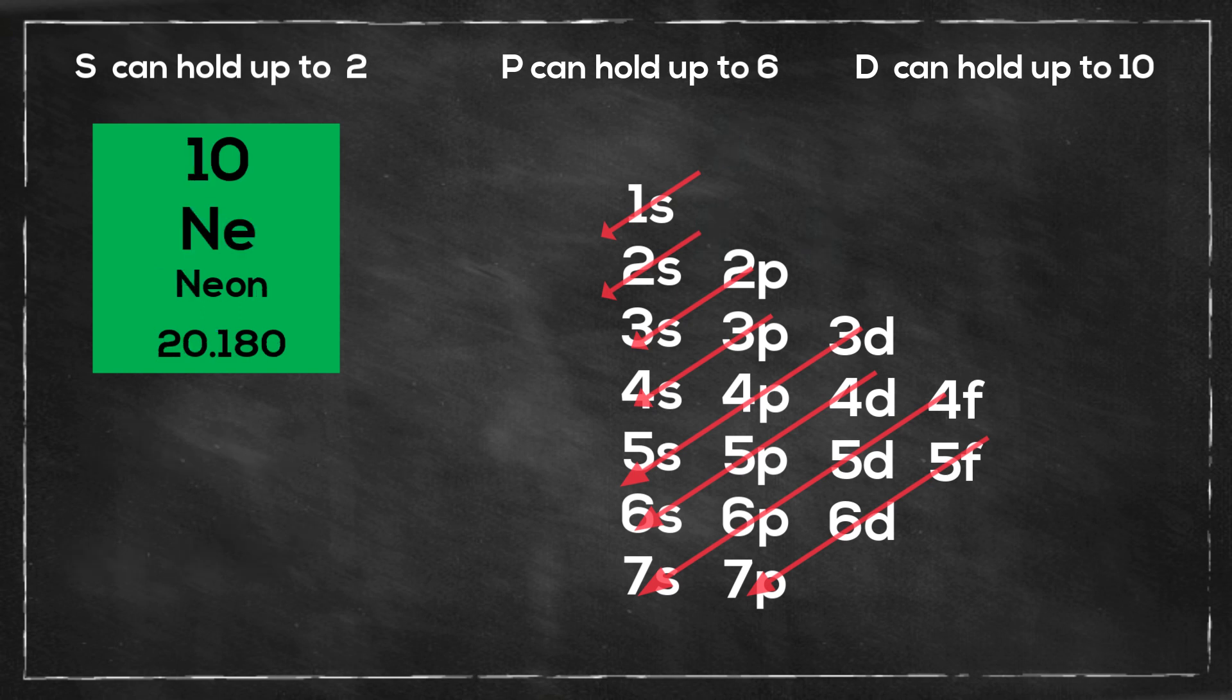Next, neon. Neon has an atomic number of 10, so neon has 10 electrons. I will start at 1s, so it will be 1s2, then move to 2s, 2s2. And that gives me 6 more, so it will be 2p6. And here it is written using the noble gas.